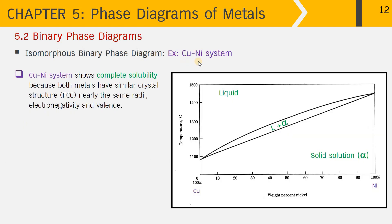Copper and nickel have quite similar atomic size and the same crystal structure of FCC, so they can form an isomorphous binary phase diagram. The copper and nickel system shows complete solubility because both metals have a similar crystal structure of FCC and nearly the same radii of atoms, electronegativity, and valence.